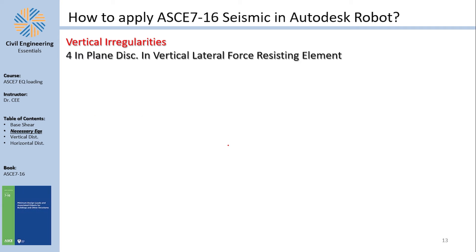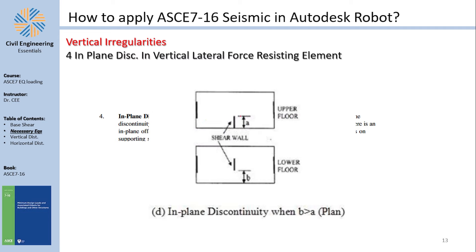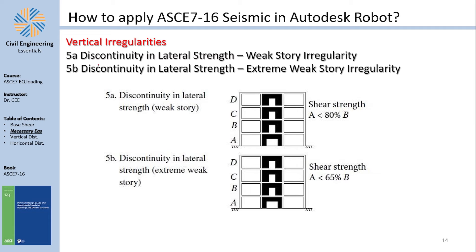In-plane discontinuity of the vertical lateral force resisting element: if shear walls at the lower level are offset relative to the upper level, that is a discontinuity in the lateral force resisting path. For lateral strength irregularity (weak story), an 80% reduction compared to the story above qualifies as a weak story, while a 65% reduction qualifies as an extreme weak story.